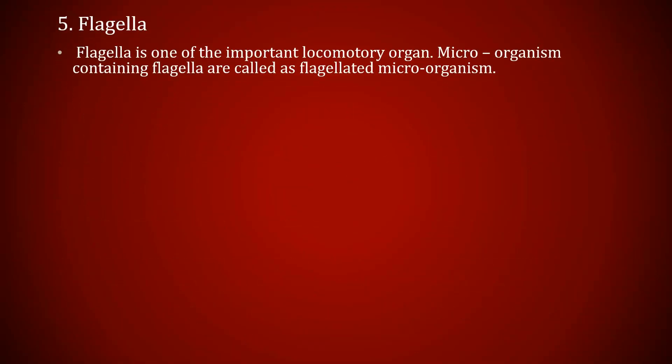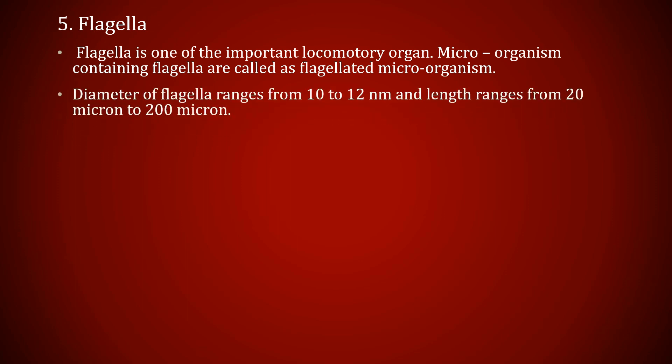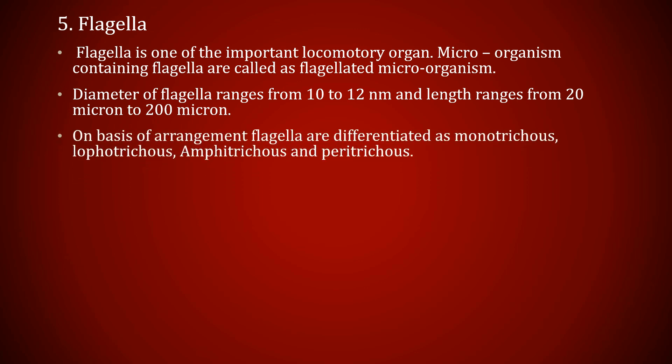The fifth one is flagella. Flagella is one of the important locomotory organs. Microorganisms containing flagella are called flagellated microorganisms. The diameter of flagella ranges from 10 to 12 nanometers and length ranges from 20 to 200 microns. On the basis of arrangement, flagella are differentiated as monotrichous — a single flagellum at one pole; lophotrichous — several flagella at one pole; amphitrichous — one or more flagella at both poles; and peritrichous — flagella randomly dispersed over the whole surface of the bacteria.